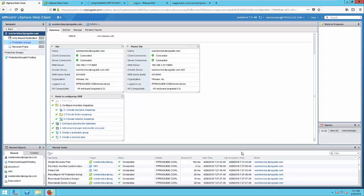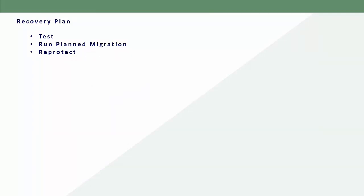Now you have created a recovery plan, and we have finished all the configurations required for Site Recovery Manager. The next part is to test our configuration. We have three options. First, you can run a test recovery to your remote site — virtual machines will be connected to an isolated network, it will not disturb your production workloads, and you can test your application, apply patches, or verify the stability of your virtual machines. Second, you can run a planned migration when you know a planned outage is coming and you want to switch all workloads from your protected site to the recovery site.